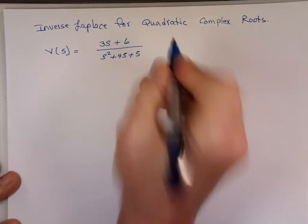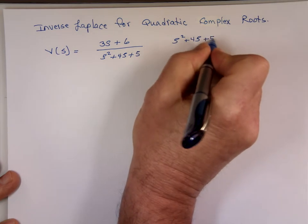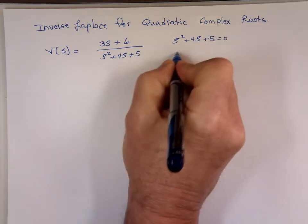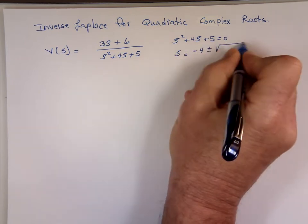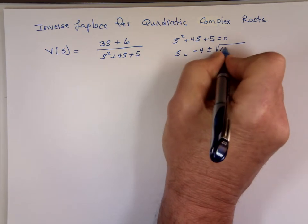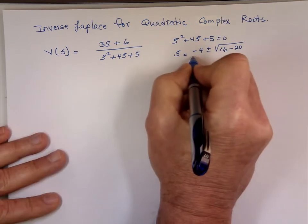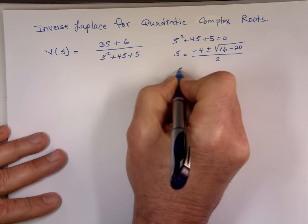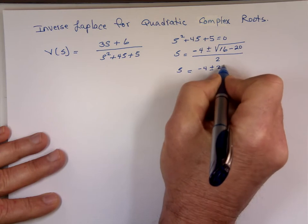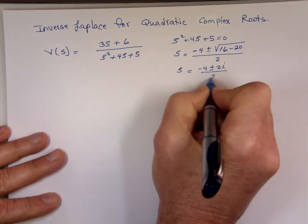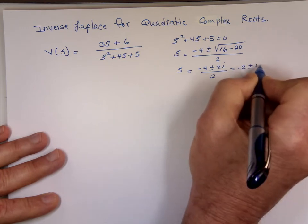I know this will give me complex roots. How do you know that? You solve this quadratic equation. To solve it, S has to equal minus B, negative 4, plus or minus the square root of B squared — that's 16 — minus 4 times A times C, that's 20, divided by 2A, which is 2. So if you solve it for S, that's negative 4 plus or minus 2i, divided by 2. So that's negative 2 plus or minus 1i.